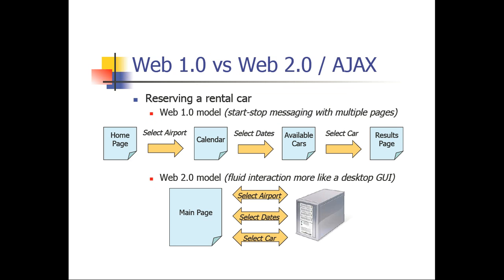This is a look at Web 1.0 versus Web 2.0, or Ajax really, and there's a large difference. For most of us in the past five to seven years, the solutions we implemented were probably based on a Web 1.0 type of architecture. In the Web 1.0 architecture, you're looking at a one-way communication. An application may have a home page, it sends a request to another app, and so on — one-way communication versus Web 2.0, which is your fluid interaction, your two-way communication.